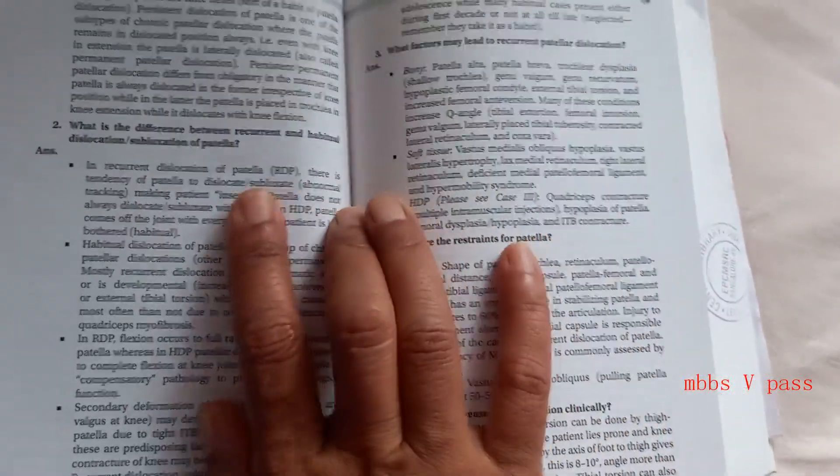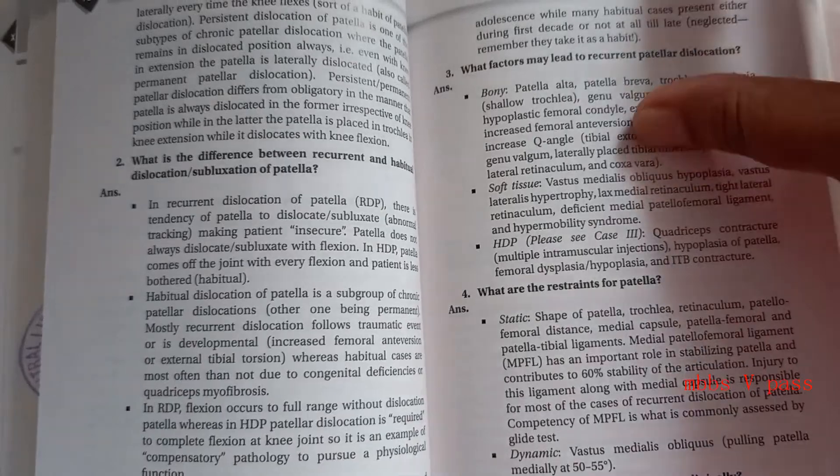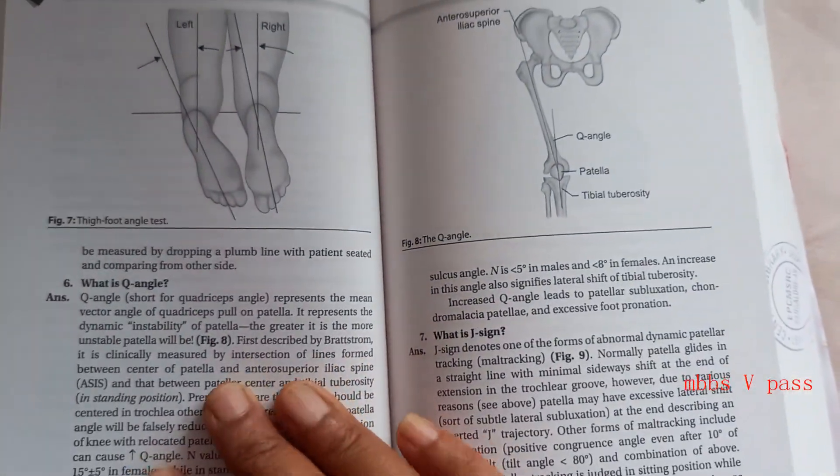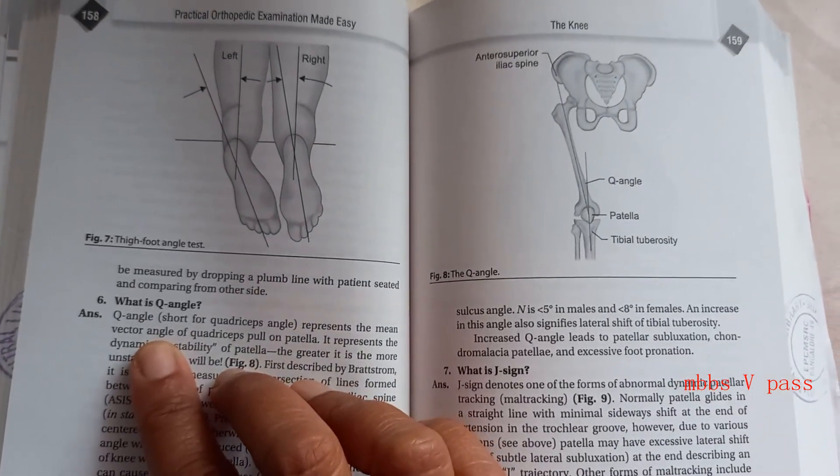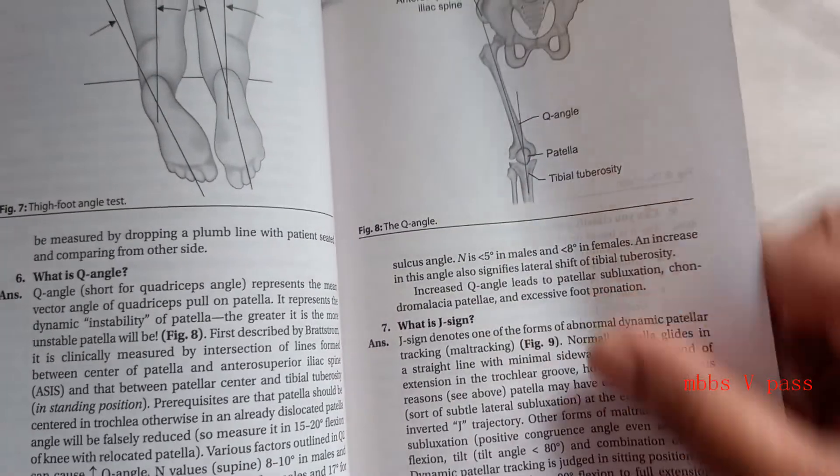So many questions about the patella. What is Q angle? Here they have explained the Q angle. So this could be our viva question. What is J sign?